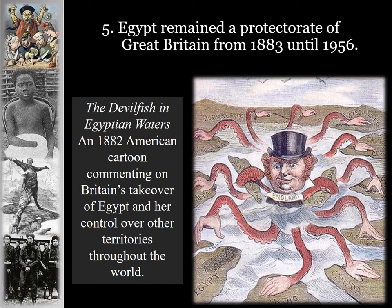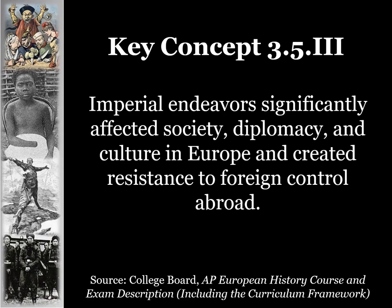A political cartoon called 'The Devil Fish in Egyptian Waters,' an 1882 American cartoon, commented on Britain's takeover of Egypt and her control over other territories throughout the world. The face representing England was actually based on a real person — British imperialist Cecil Rhodes, who had taken over a central African region that he named Rhodesia, where many diamonds came from.